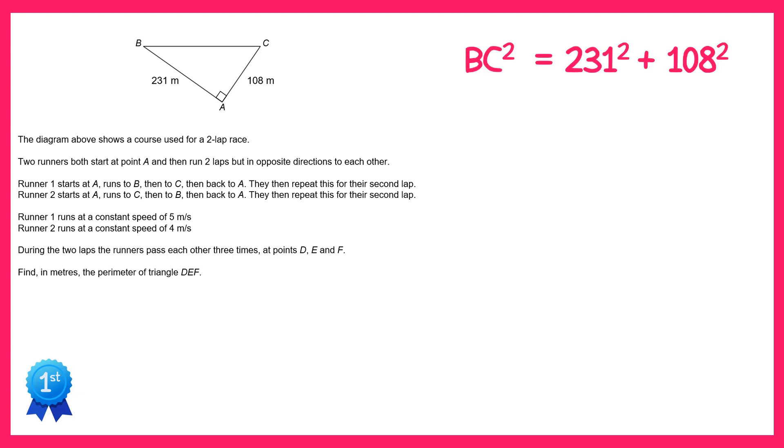So BC squared is 231 squared plus 108 squared. If you work out the right hand side here you get 65,025 and if you square root both sides you'll find that BC is 255 metres. So let's add that to the diagram.